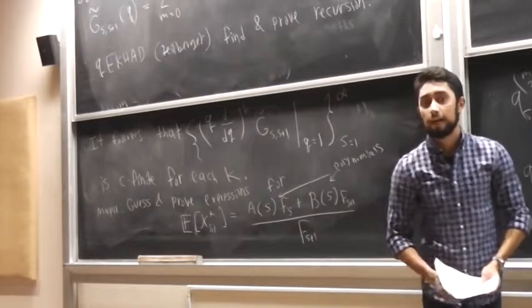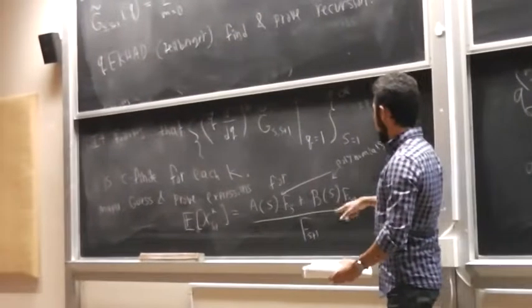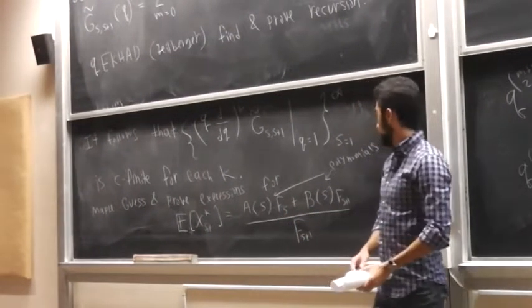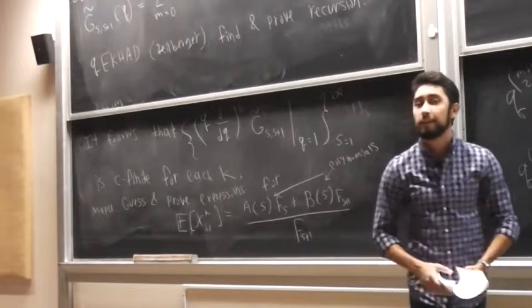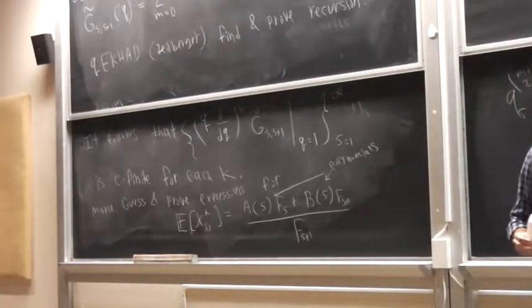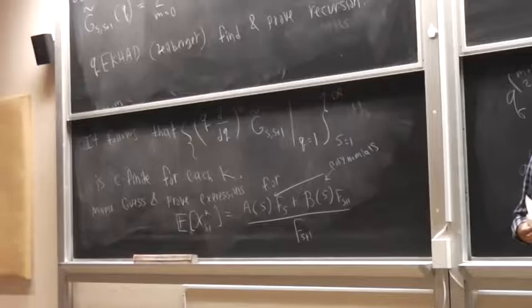And we found that each kth moment is of this form for certain polynomials. So in this case it's not exactly a polynomial expression, it's a linear combination with Fibonacci numbers divided by Fibonacci numbers.